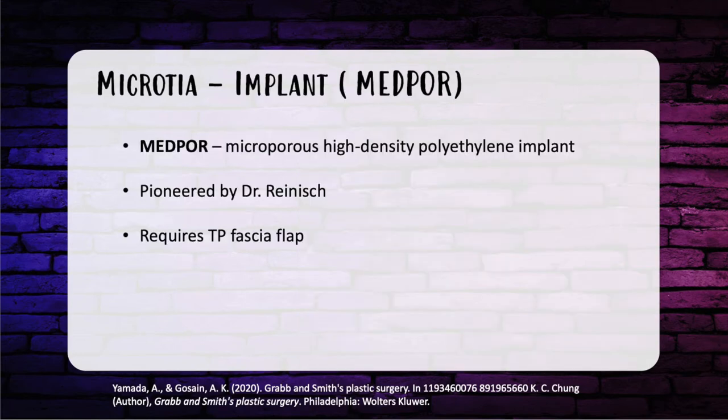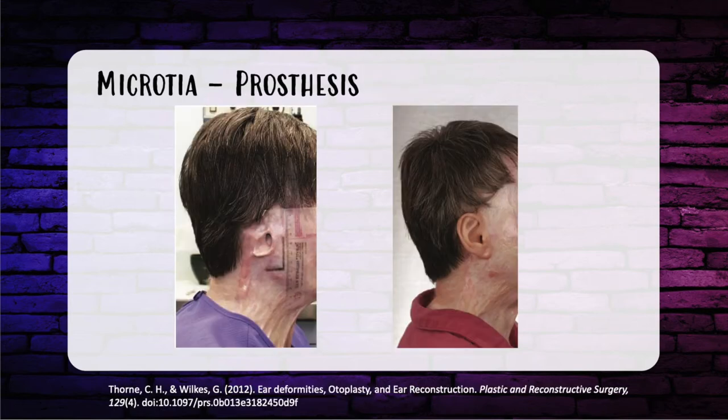The second method of microtia repair uses a microporous high-density polyethylene implant — the MedPor implant — as described by Dr. Reinisch. It requires a temporoparietal fascia flap, has a high learning curve, and a high extrusion rate. The third route is the use of an osseointegrated prosthesis.